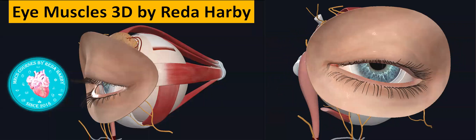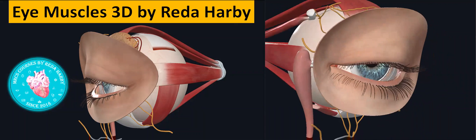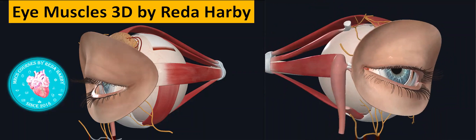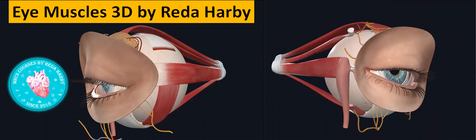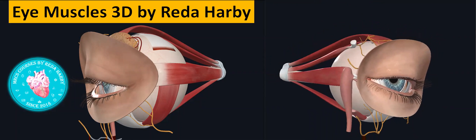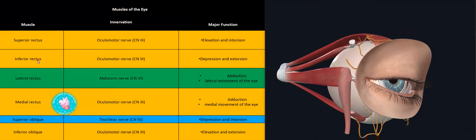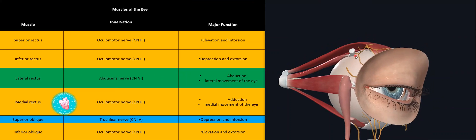Hello everyone, this is the eye muscles and innervation with the portion of each cranial nerve in a 3D version. If you look at this eyeball you will find extraocular muscles, and in this table it is nicely illustrated that all muscles are called recti and obliques. Recti means straight and oblique means oblique.